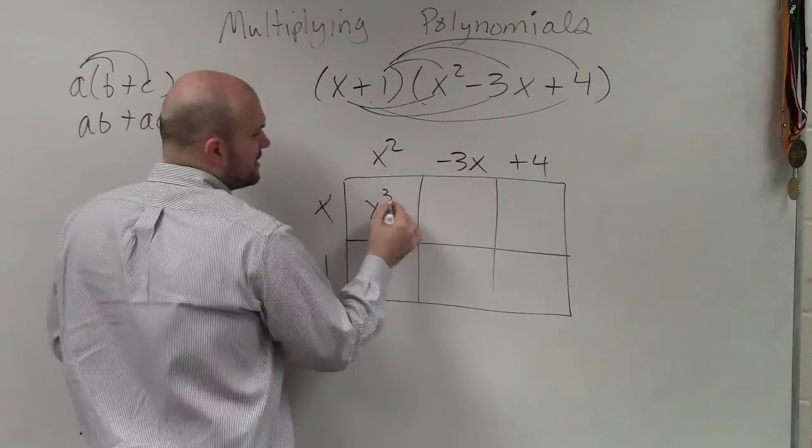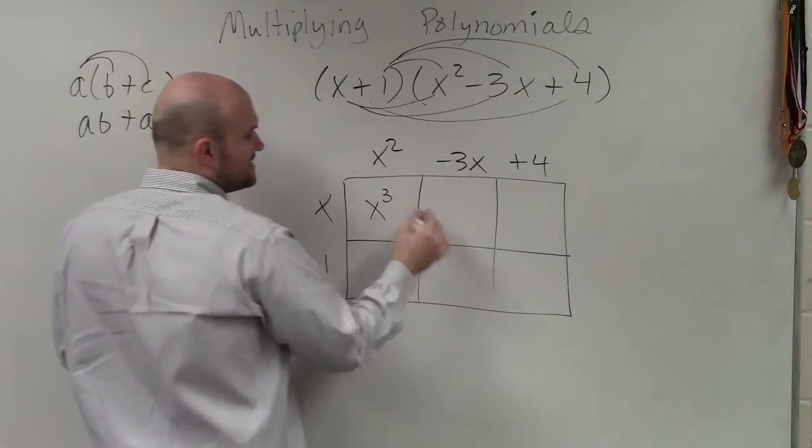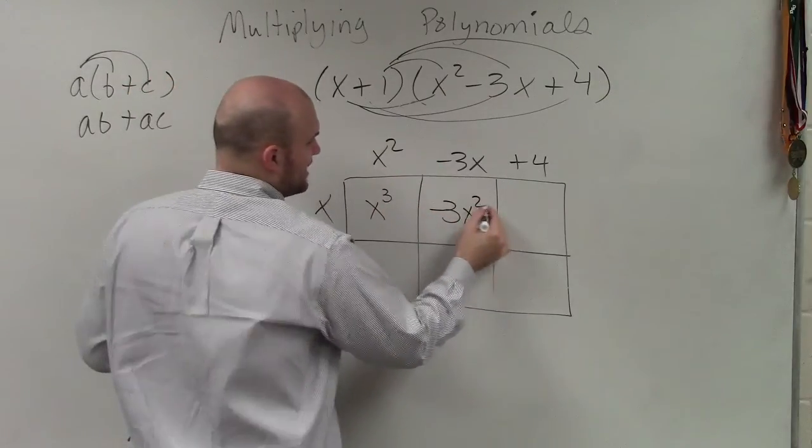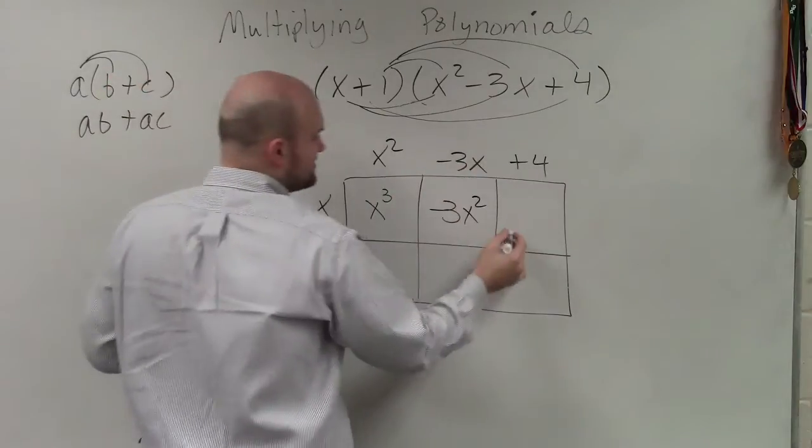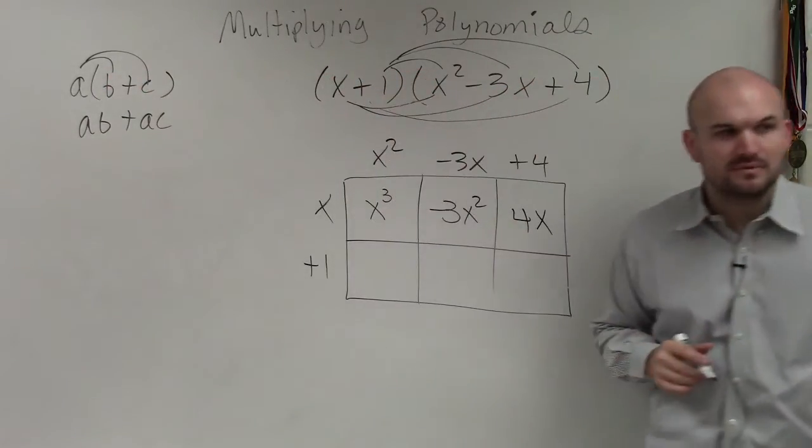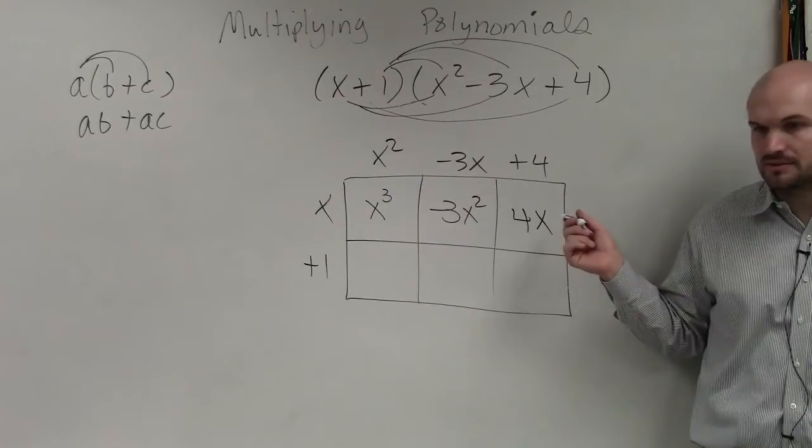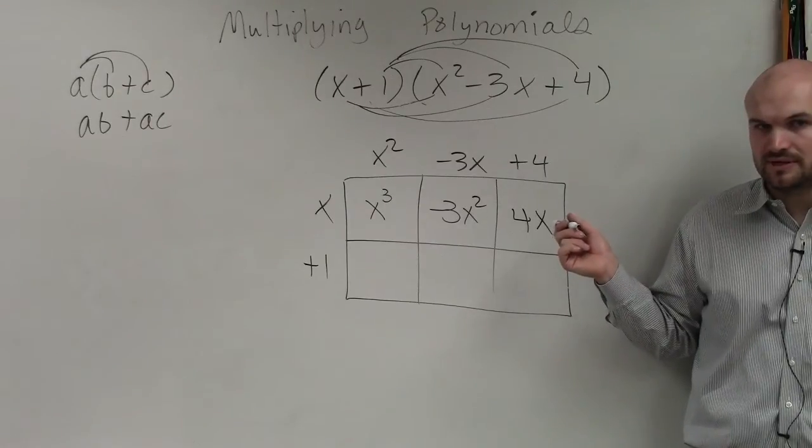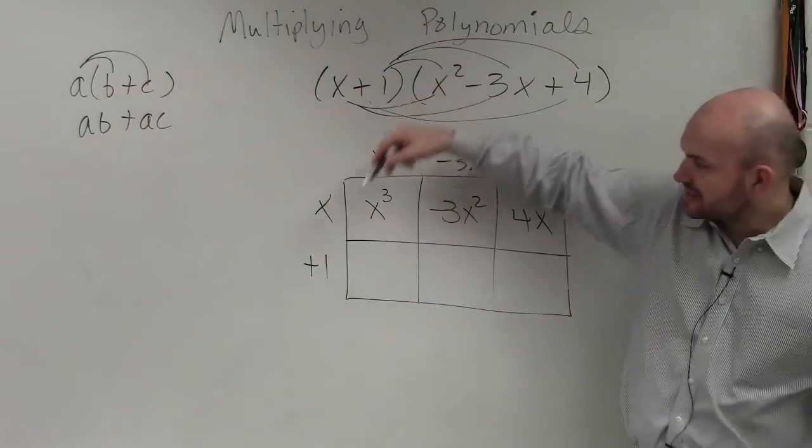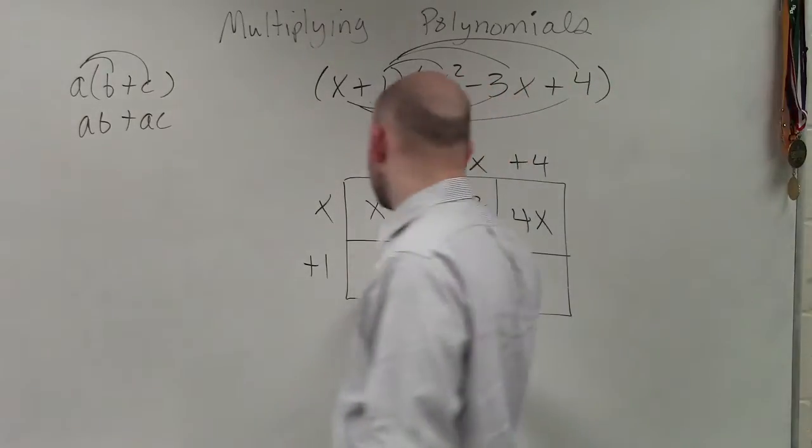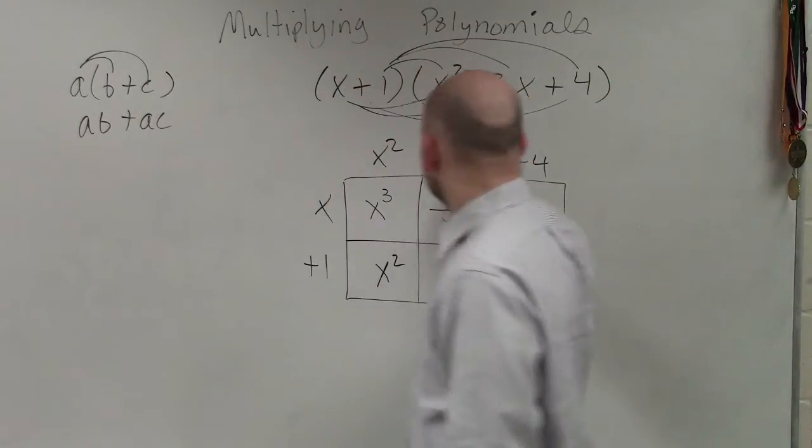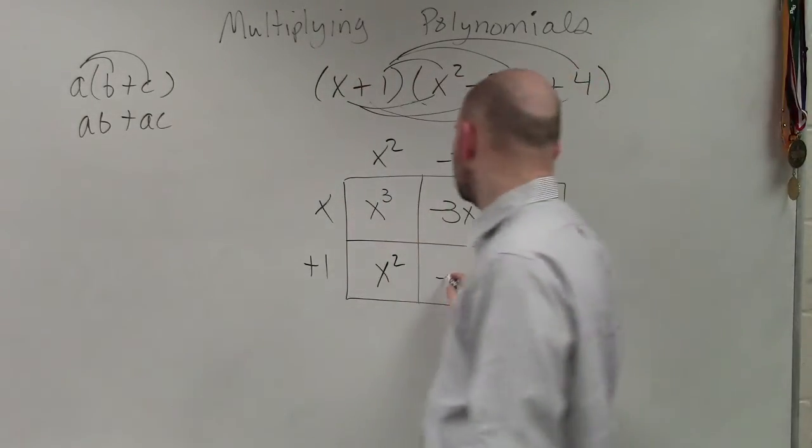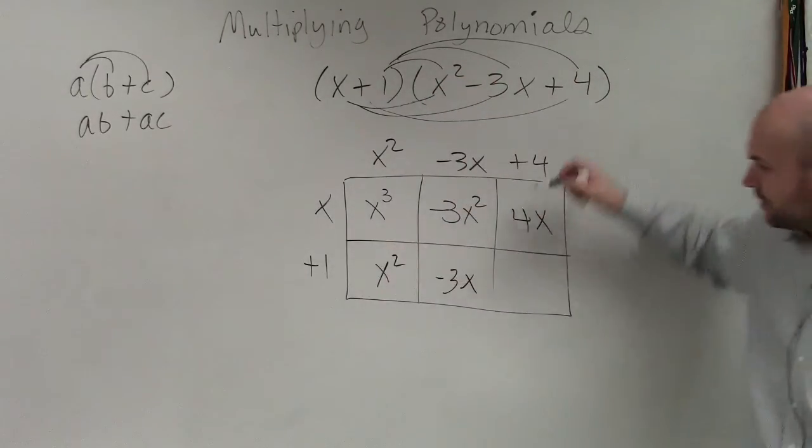x times x² is x³. x times negative 3x is negative 3x². x times 4 is 4x. Does everybody follow me with that? I'll get there. Then I have x² times 1 is x². Negative 3x times 1 is negative 3x. And 4 times 1.